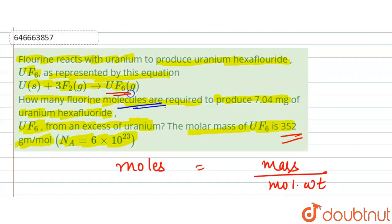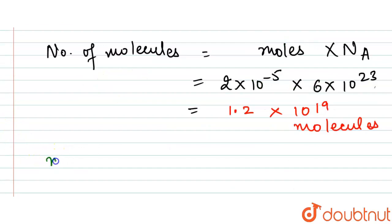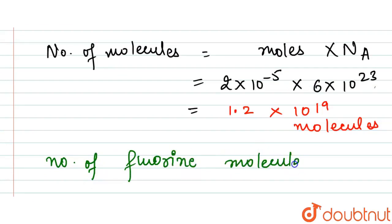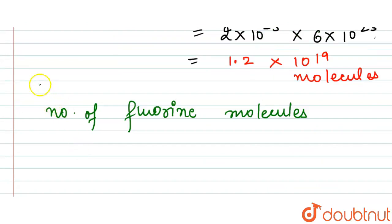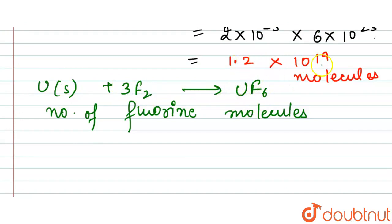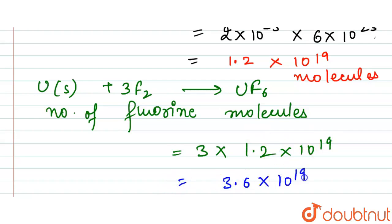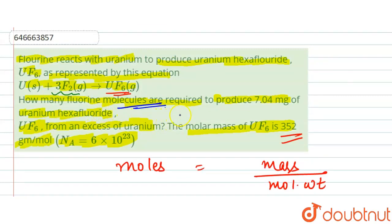Now, using stoichiometry from the equation U + 3F₂ → UF₆, for every 1 molecule of UF₆ produced, 3 molecules of F₂ are required. Since we have 1.2×10¹⁹ molecules of UF₆, the number of fluorine molecules equals 3 × 1.2×10¹⁹ = 3.6×10¹⁹. That is our required answer.